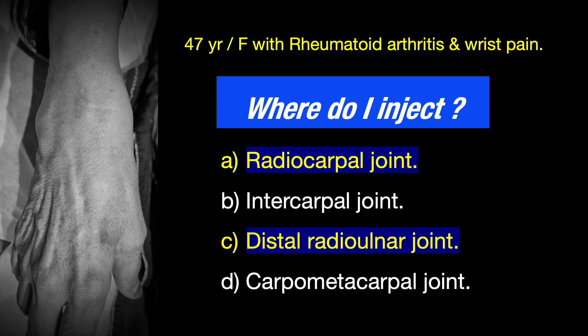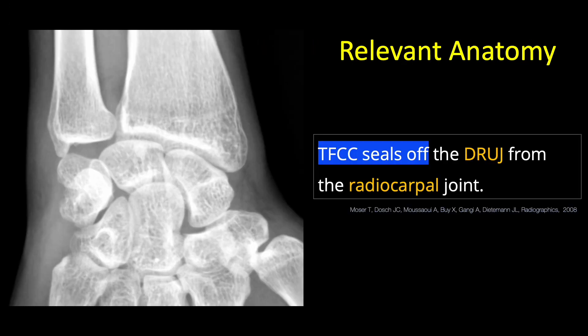Based on the pre-procedure diagnostic ultrasound scan, I decided to inject both the radiocarpal and the distal radio-ulnar joint so that the patient can have maximum benefit. The wrist joint is divided into three compartments: the radiocarpal compartment, the intercarpal compartment, and the distal radio-ulnar joint. The triangular fibrocartilage complex seals off the DRUJ from the radiocarpal joint, forming two watertight compartments, so both joints must be targeted separately.